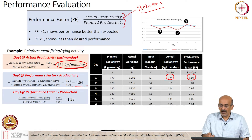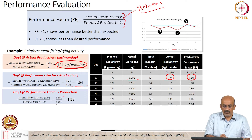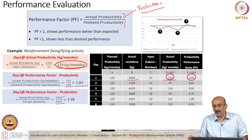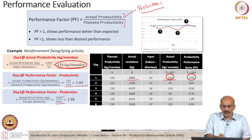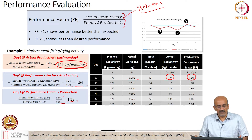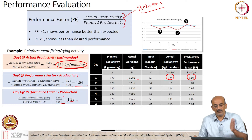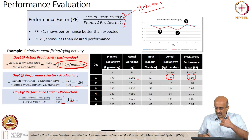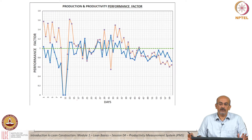Similarly, my actual work done is 6589, divided by 4167, which is my required daily production, and I will get my production performance value. So these are the two factors: performance for productivity and performance for production.